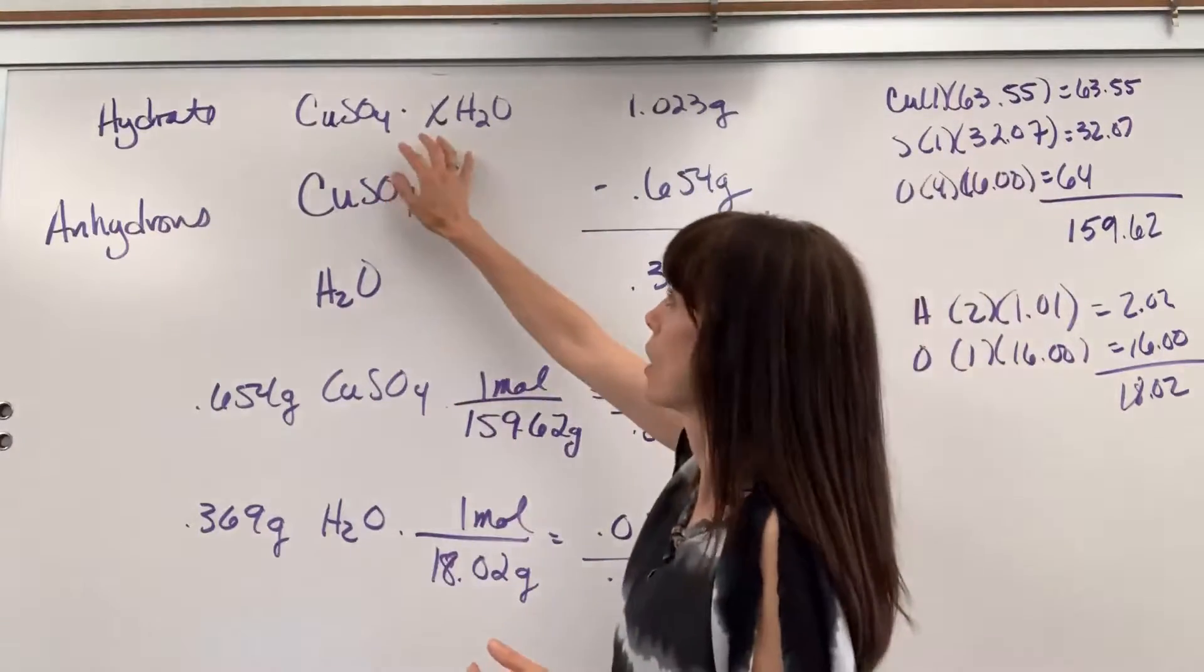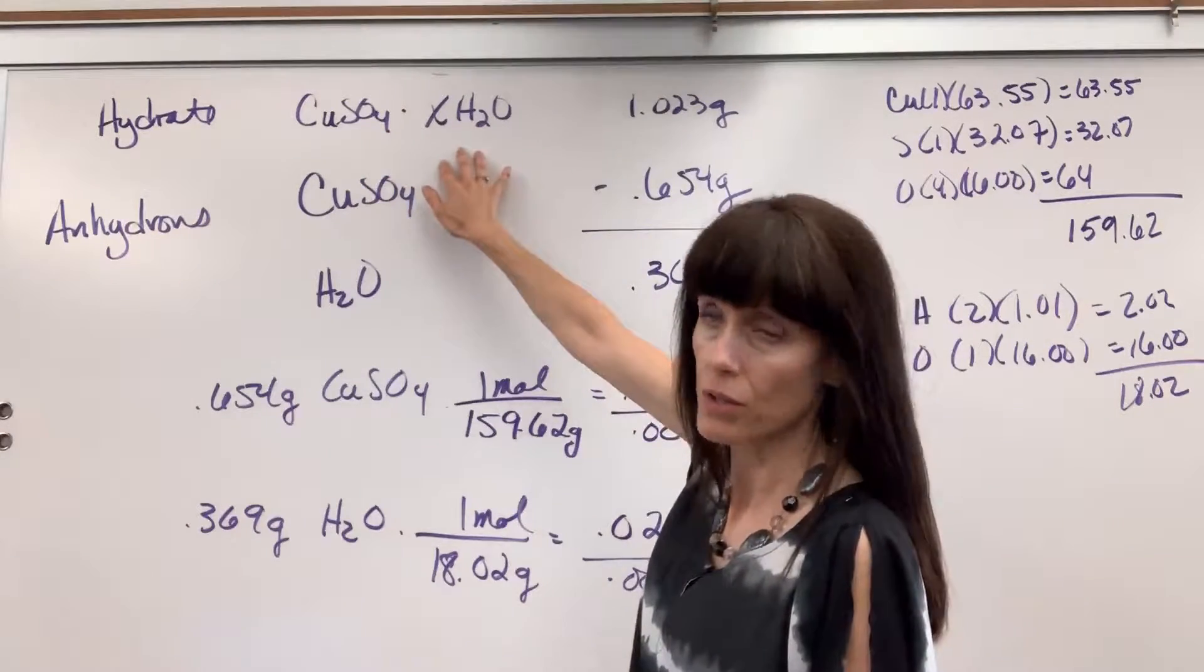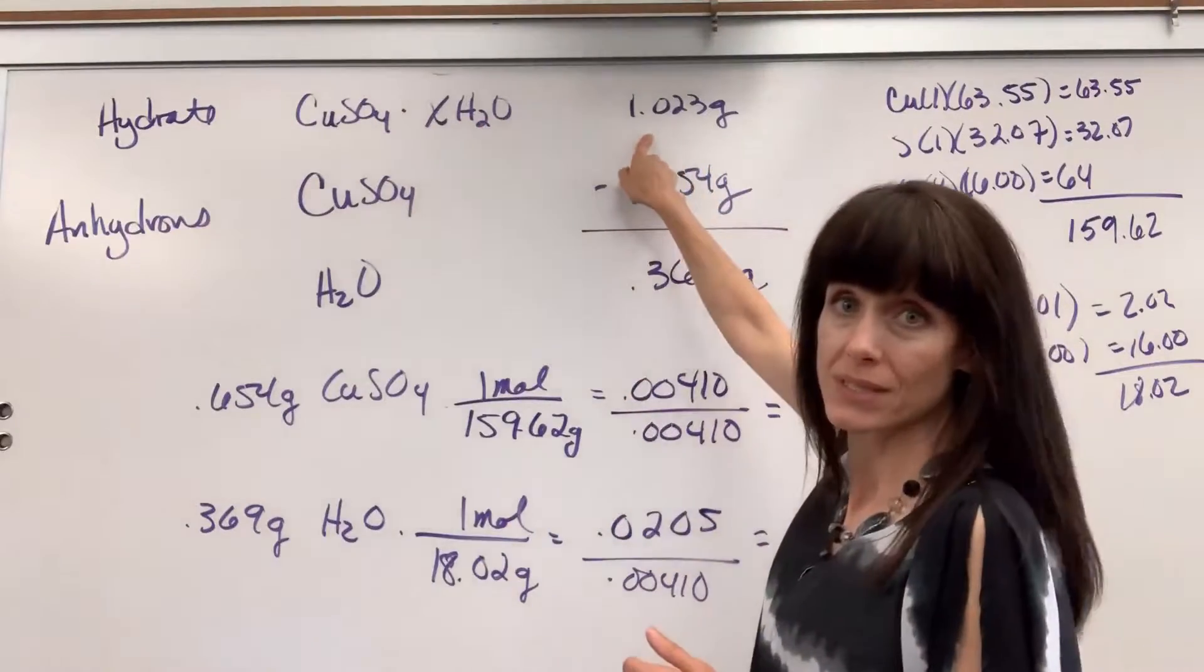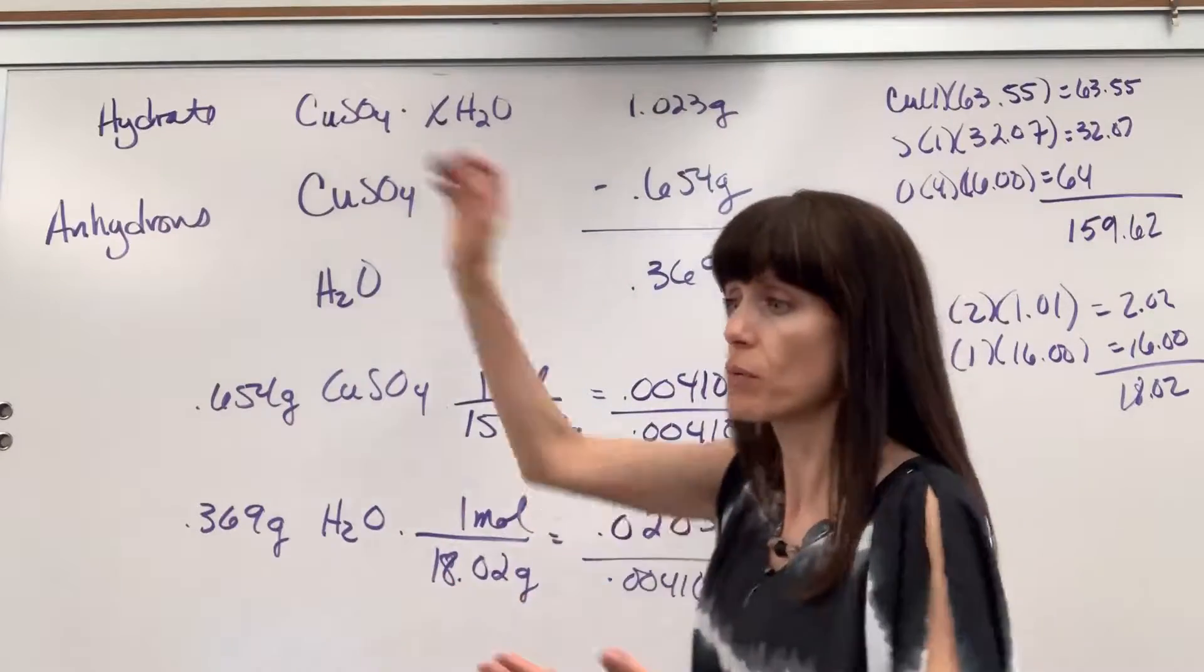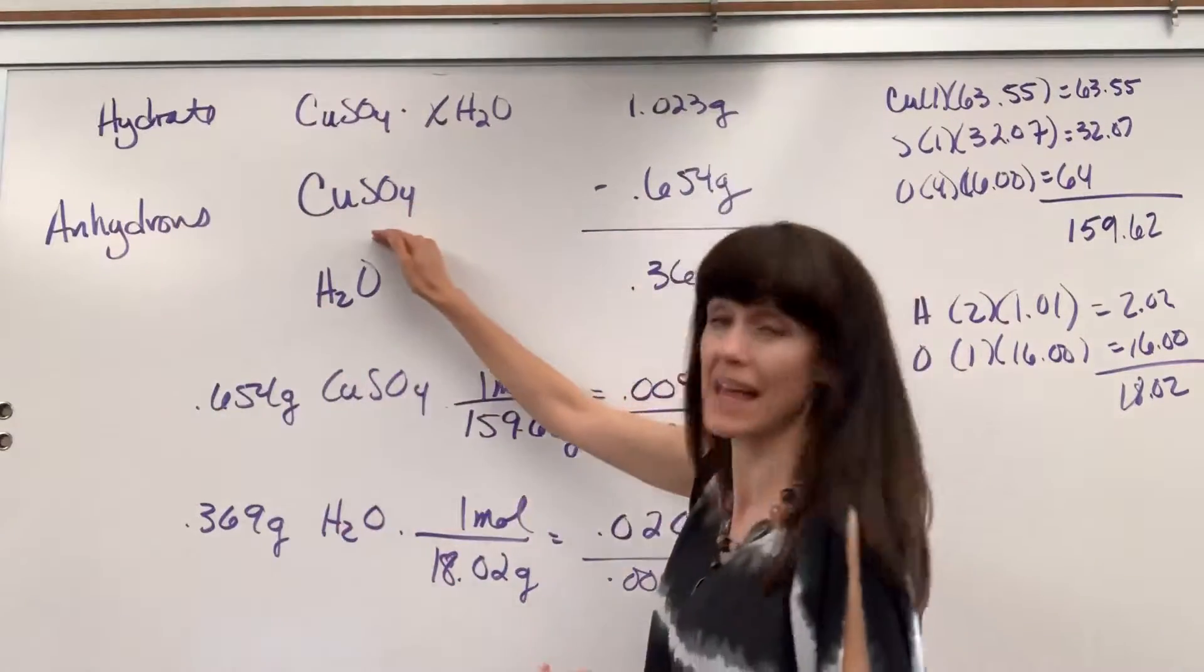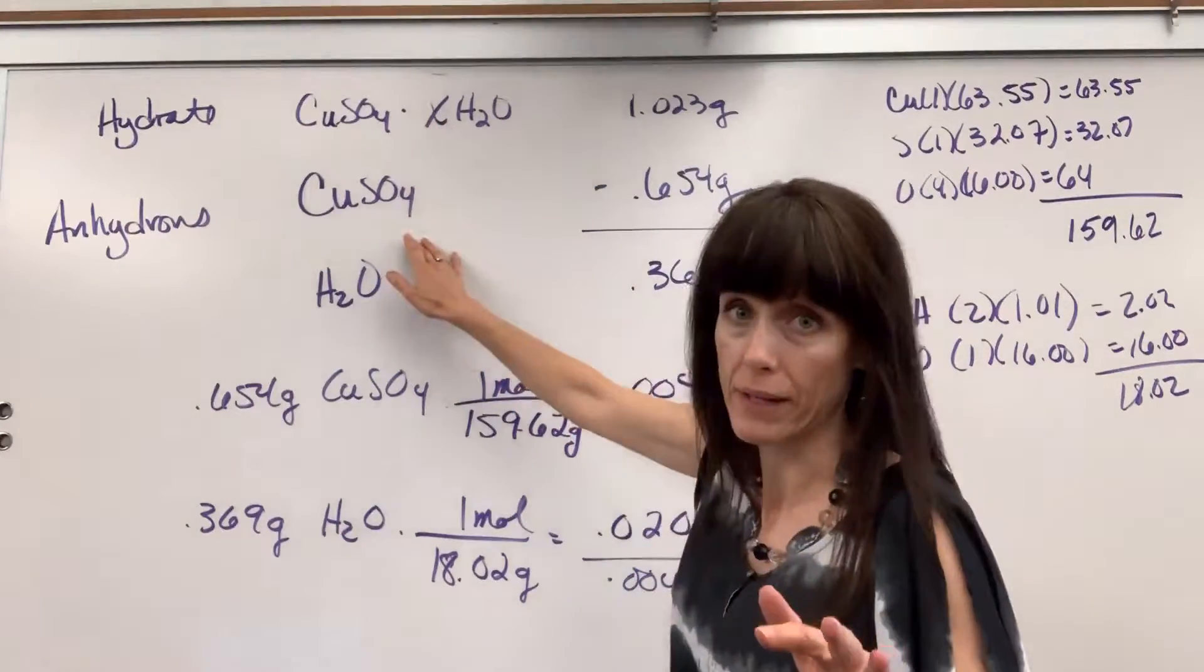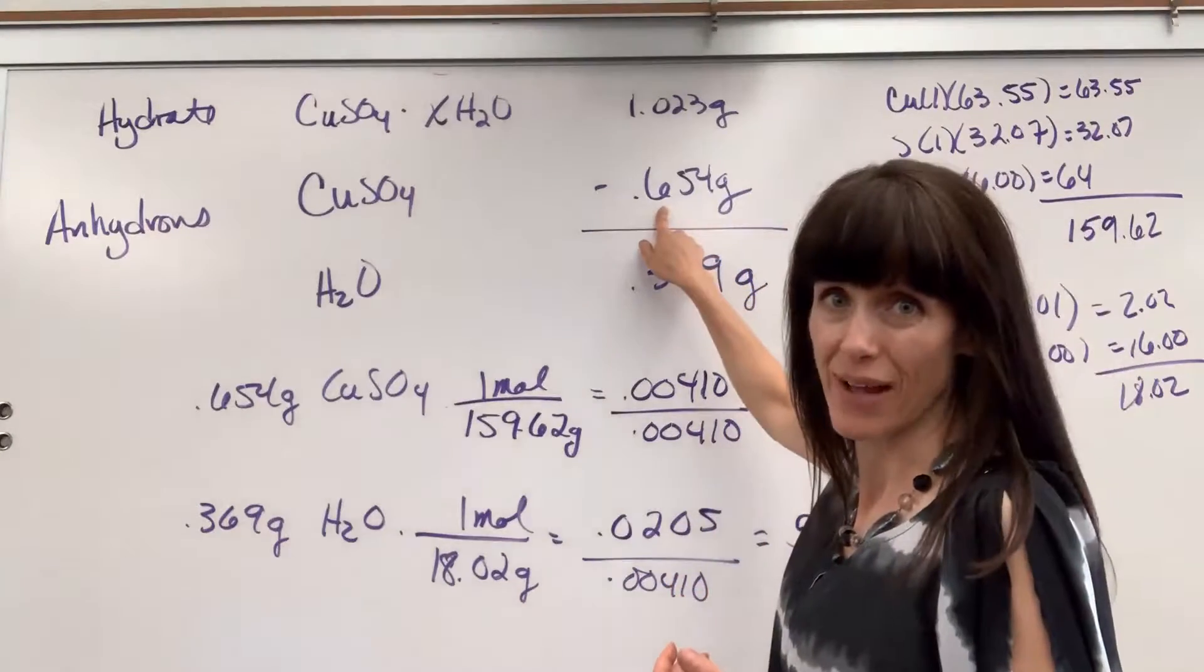Let's say that you have this copper 2 sulfate, unknown amount of water molecules - a hydrate, that's all we know - and you weigh out 1.023 grams. You cook it. All the water escapes, it's evaporated, it is completely gone, and what's left is the anhydrous copper 2 sulfate. It changes from a blue color to a white color. You weigh that and it weighs 0.654 grams.